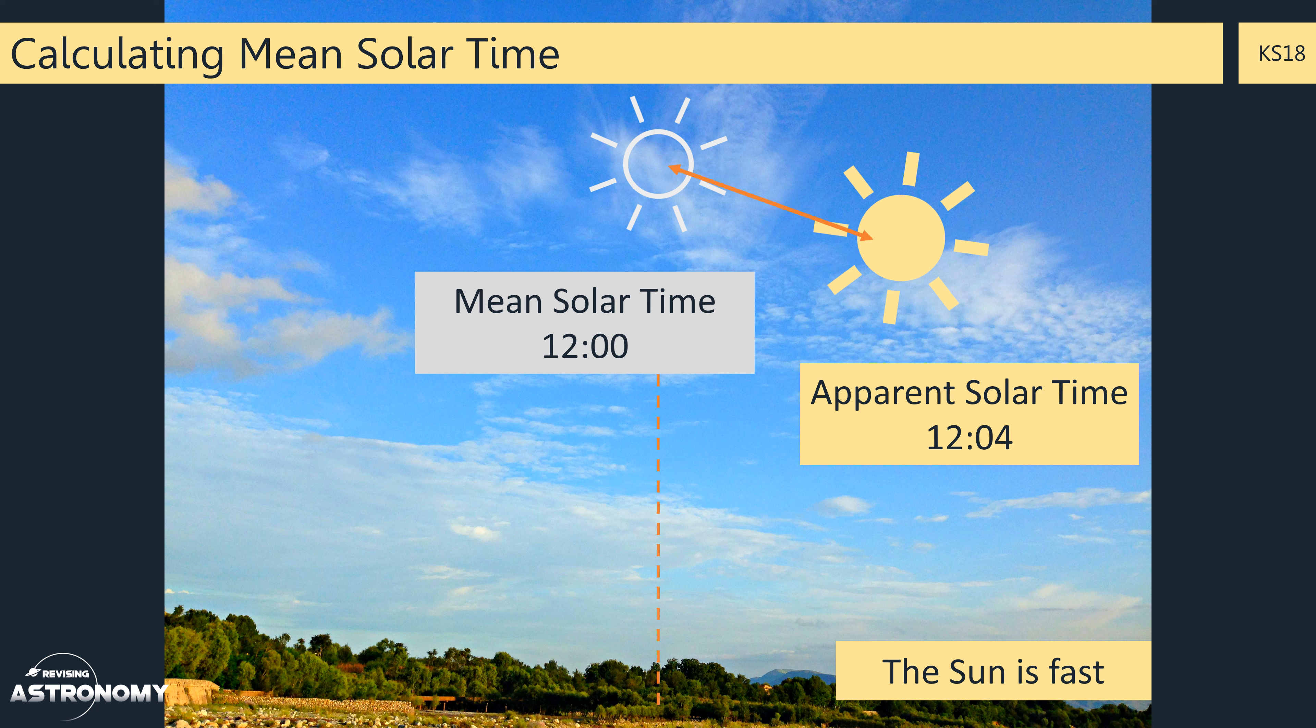In this case, the equation of time will be plus 4 minutes, the difference between the two times. Note how it's positive now, as the Sun is fast on this day.